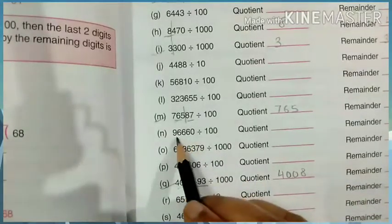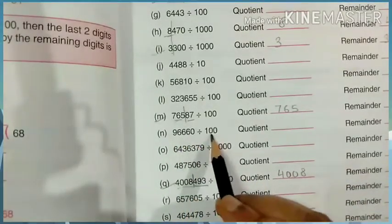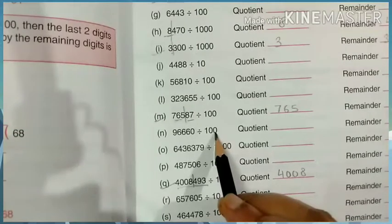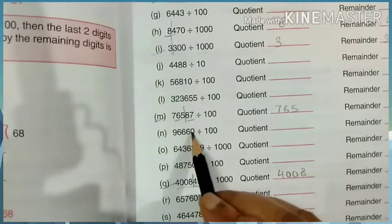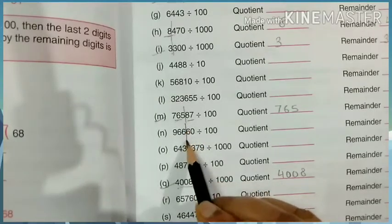Just like this one. 96660. How many zeros are there? Two zeros are there. So how many zeros are there? Two zeros. After two zeros, we will put a block.